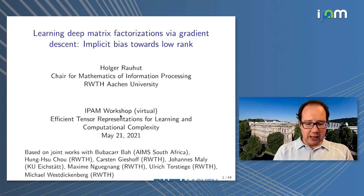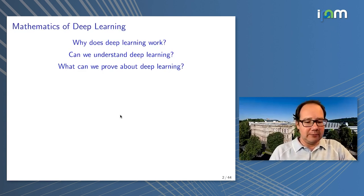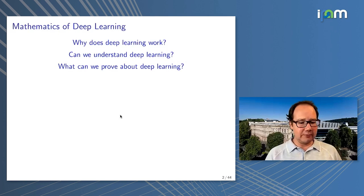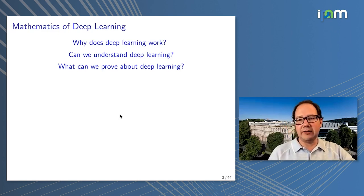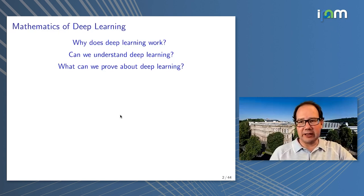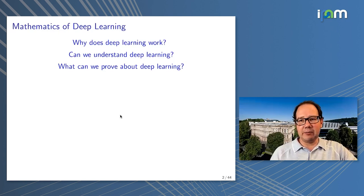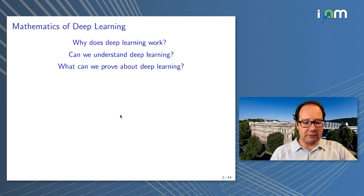I don't think I need to introduce deep learning to you. We all know it's a great tool that has led to an enormous number of breakthroughs in all kinds of applications, like protein folding, autonomous driving, and face recognition. But despite all these successes, it's not really clear why all this works so well. We're starting to get some understanding, but there are still many question marks.